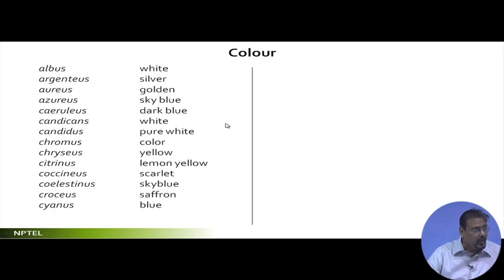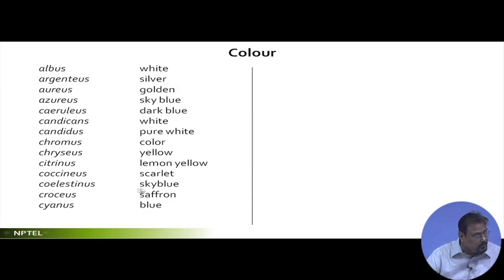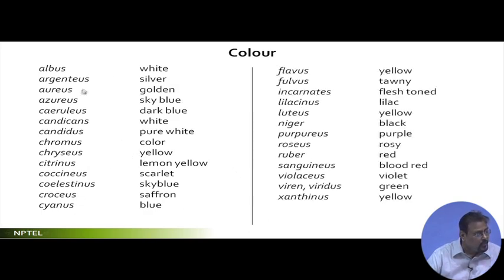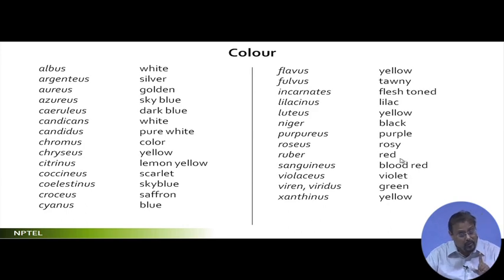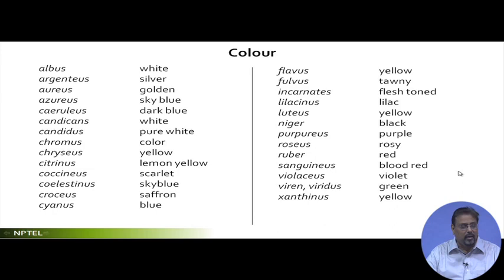For colors: albus is white — remember Plumeria alba, which has whitish flowers. Azureus is sky blue, caeruleus is dark blue. Plumeria rubra — rubra is reddish. Plumeria: two different species with two different flower characteristics — one has a white flower, one has a red flower. And Tabebuia rosea — rosea means rosy, pinkish. That is how the whole thing works.